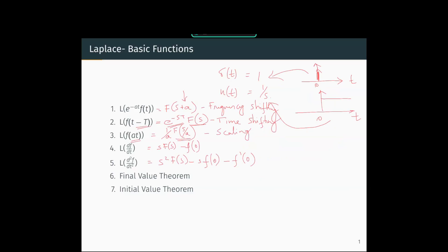The Laplace transform of the derivative of a function is s·F(s) − f(0). This is the differentiation theorem. And the Laplace transform of the second derivative is s²·F(s) − s·f(0) − f'(0). Now we have two important theorems which will be very useful in control systems: the final value theorem and the initial value theorem.